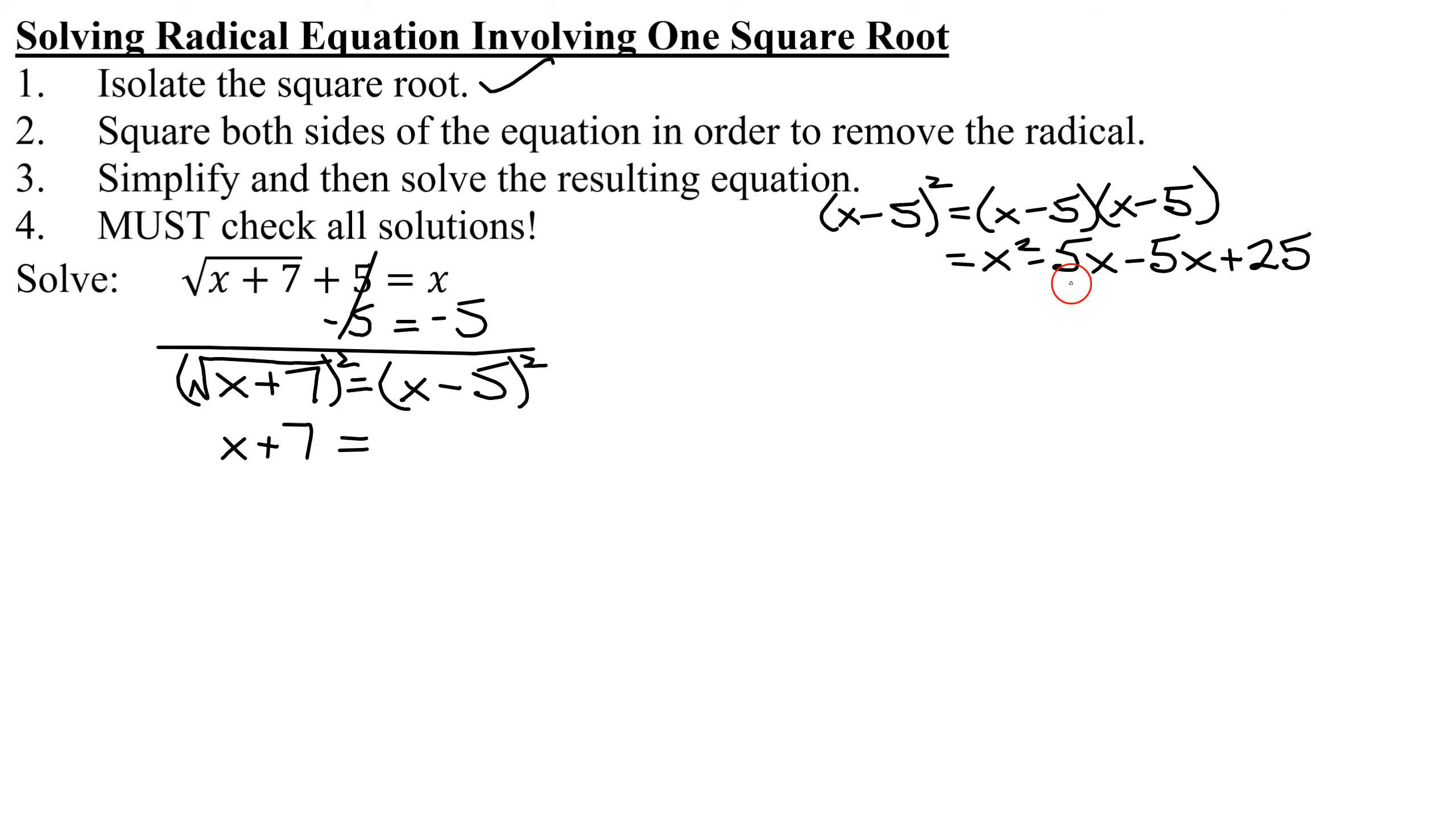So what does this simplify down to? I'm going to get x squared. The middle two terms add together. Negative 5x and negative 5x is negative 10x. And then lastly, plus 25.